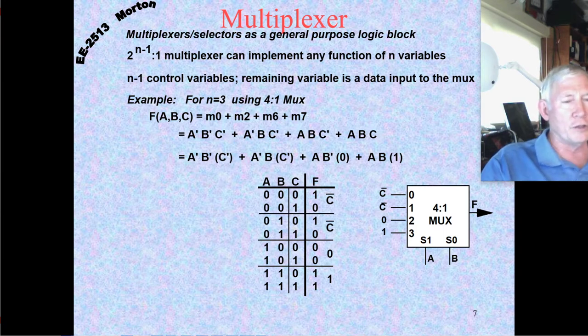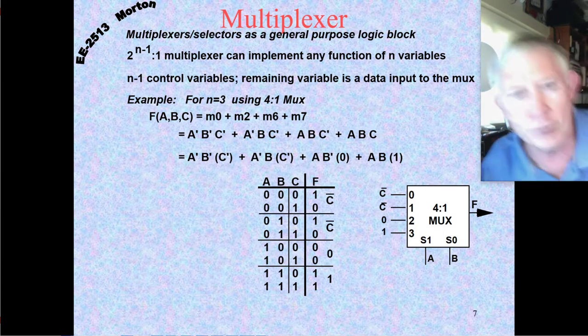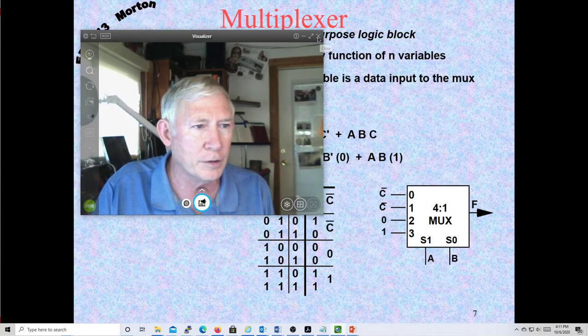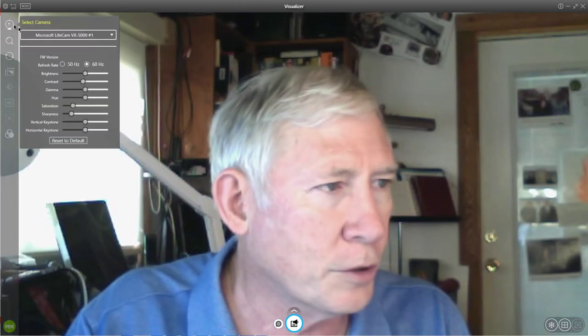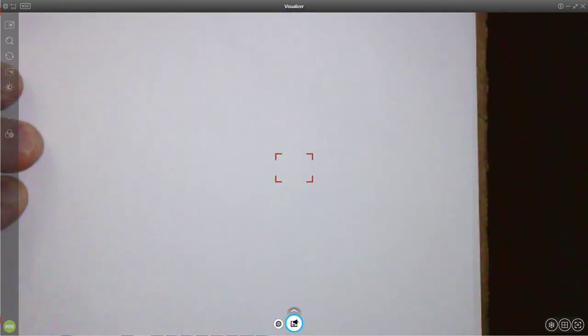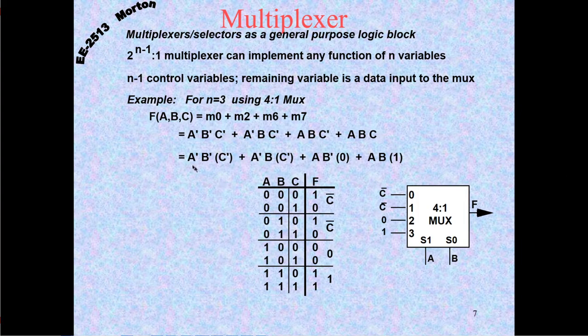You definitely need to know this — this is important. I'm going to draw this out because I want you to get this. Let's say we're going to implement — I'll do the one on the slides. On the slides, we have this truth table right here, so I'm going to copy that truth table.